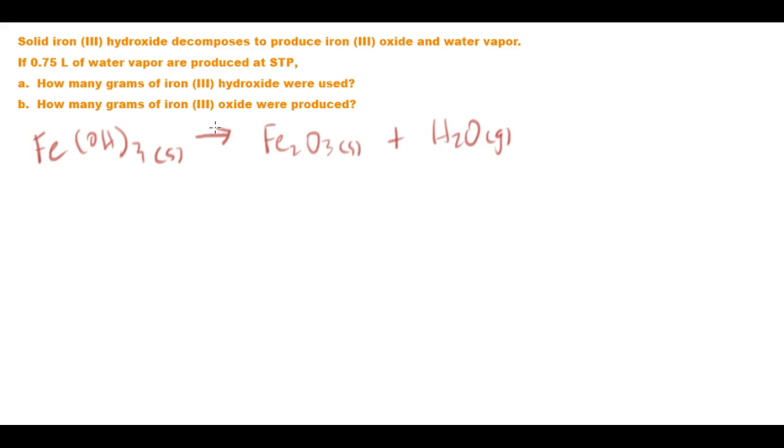Now this process will actually be a thermal decomposition so you heat up iron 3 hydroxide and you produce basically rust and a little bit of water vapour. So first off we're going to need to balance this equation.